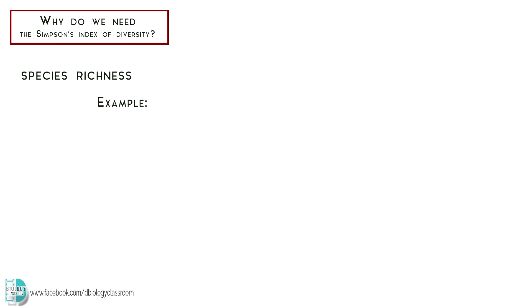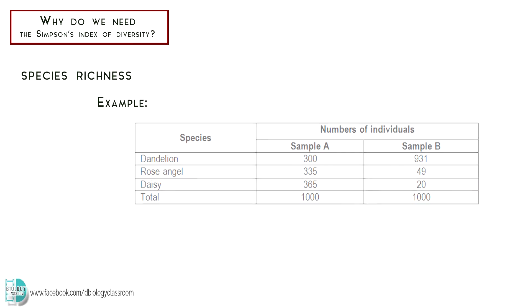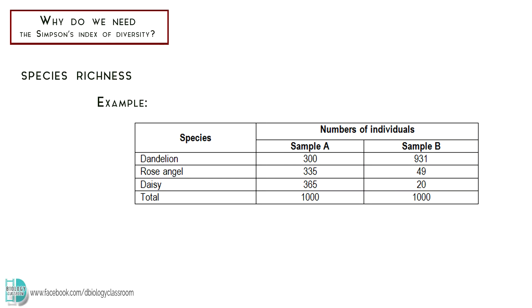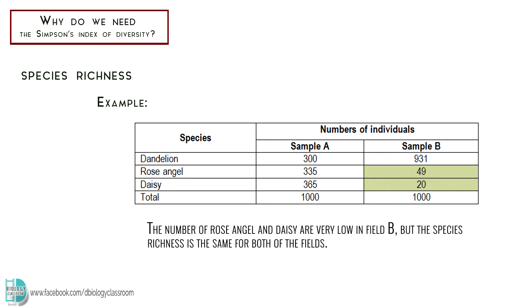For example, there are three different species of wildflowers found in field A and B. Even though the number of rose, angel, and daisy are very low in field B, the species richness is the same for both of the fields.